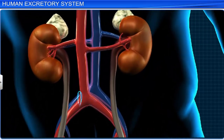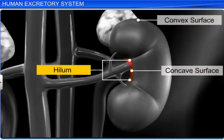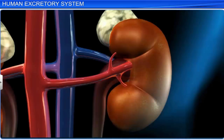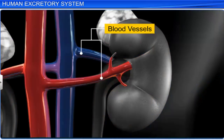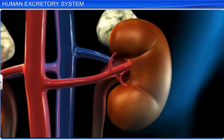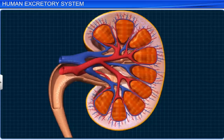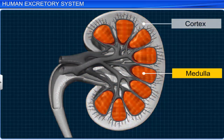The kidneys have an outer convex surface and an indentation, or a notch, on the inner concave surface called the hilum, through which blood vessels, nerves, and the ureters pass. The kidney has a tough, fibrous outer layer called a capsule, and its longitudinal section shows that its inside is differentiated into two main regions: an outer cortex and an inner medulla.